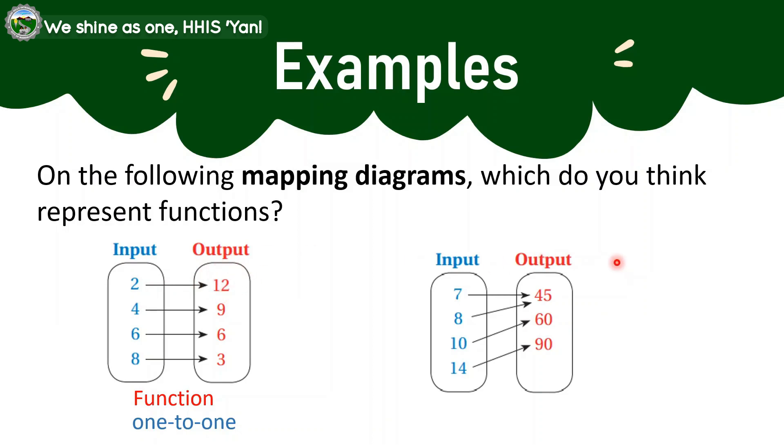Let us now proceed to the example number 2. So here, this also signify a function. And then, our relationship depicted by this example is a many-to-one function. Since there are many elements, let us say in this example, we have 7 and 8 in our input being matched to just an element or one element to our output. The 7 and 8 is matched to the 45. So we consider this example as a many-to-one function.